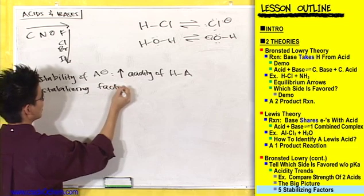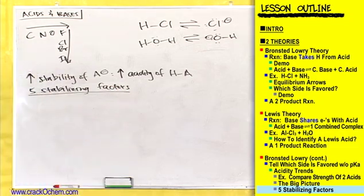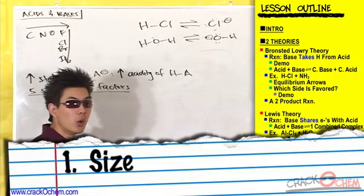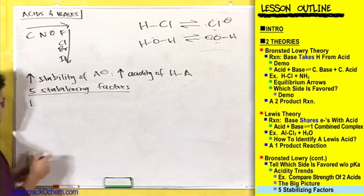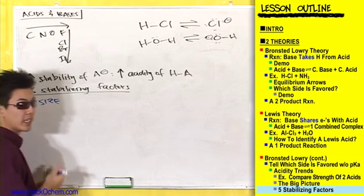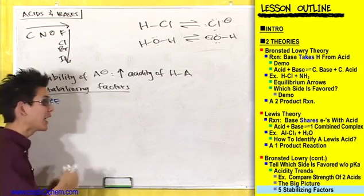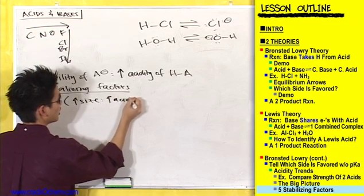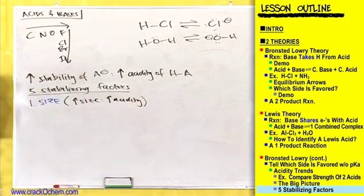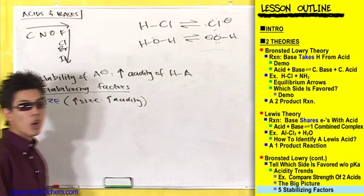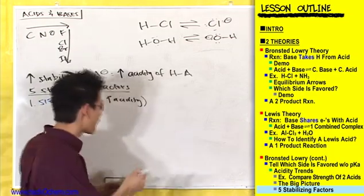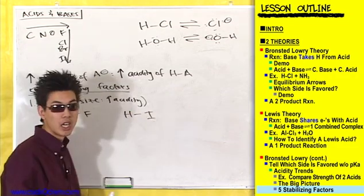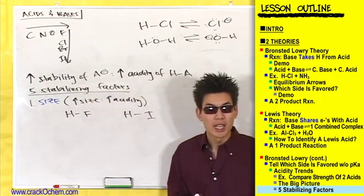Five stabilizing factors. The first, most important factor that you always look at is size. Increase the size of the atom that the hydrogen is attached to, and you increase the acidity. For example, let's compare HF and HI. Which one of these is bigger — fluorine or iodine?